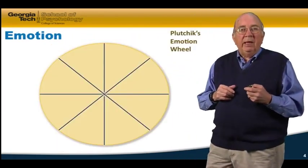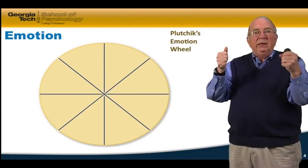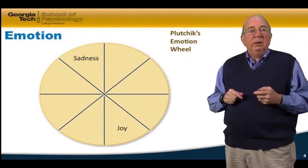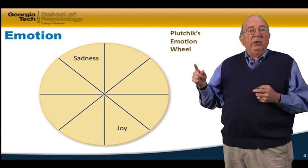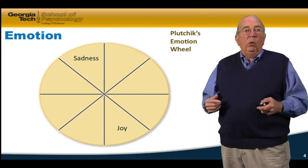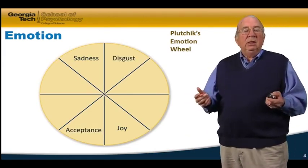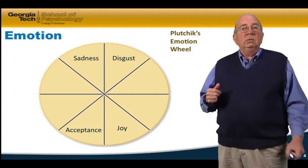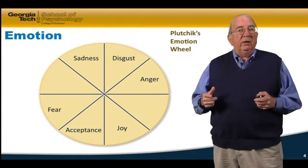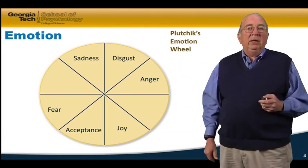Another attempt was by Plutchik. He created his emotion wheel, which placed emotional states opposite each other. For example, you could have sadness or happiness — sadness and joy opposite each other. Or you could have disgust and acceptance, another opposite emotional state. You could have anger or fear, very different from each other, but along the same dimension.